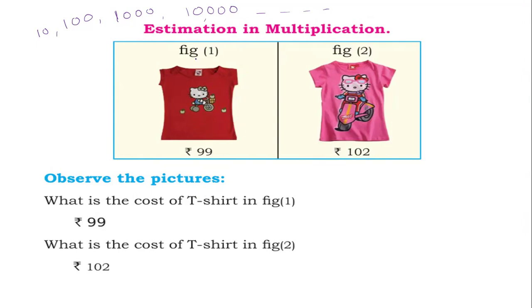Here a figure is given. A Tissot watch — its cost is 99. Another cost is 102. We need to estimate these to the nearest 10.